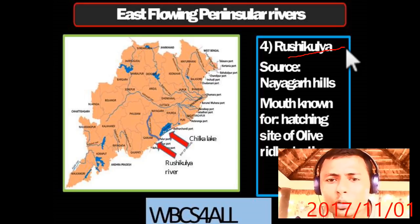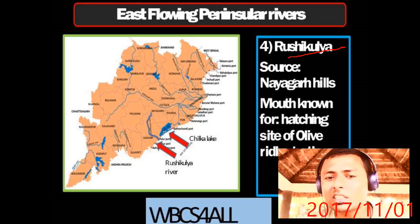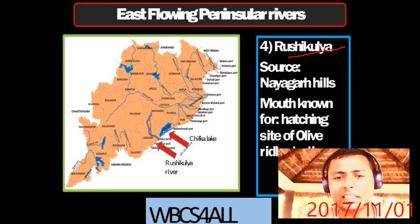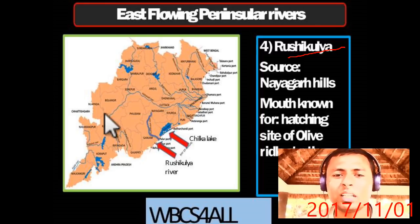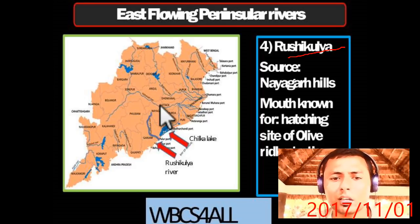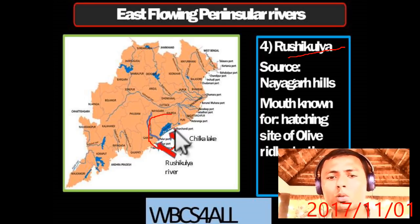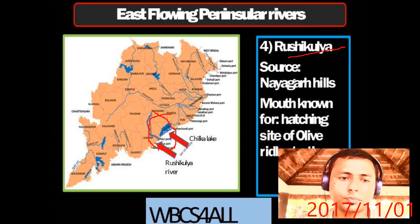One small but important river in Odisha is the Rushikulya, whose source is the Nayagarh Hills. Its mouth is known as a hatching site for olive ridley turtles. The Chilika Lake is located near the Rushikulya River.